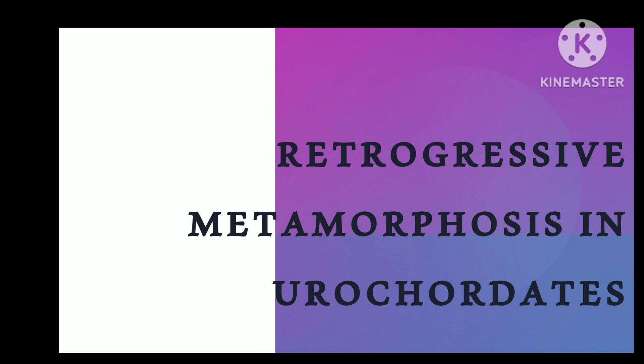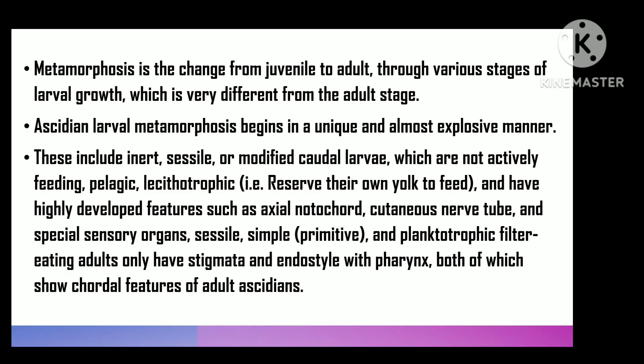Today's topic is retrogressive metamorphosis in urochordates. Metamorphosis is a change from the juvenile to adult stage in which development passes through different larval stages, which are quite different from the adult stage. Metamorphosis of the ascidian larva is unique and begins almost explosively.